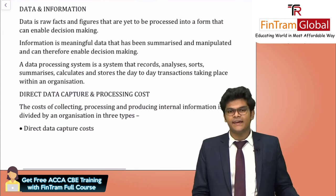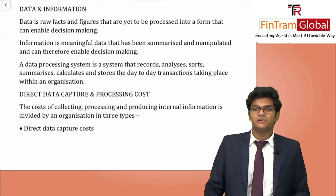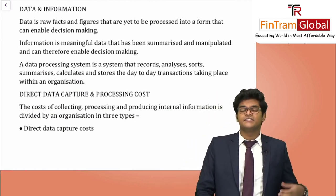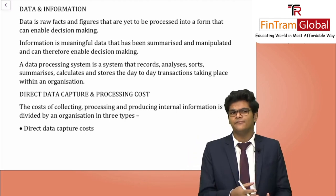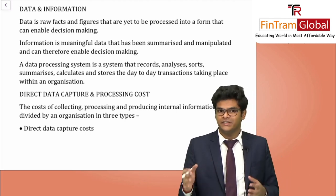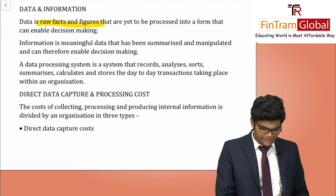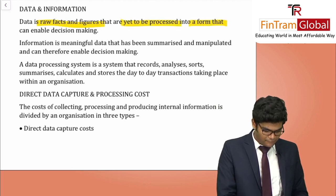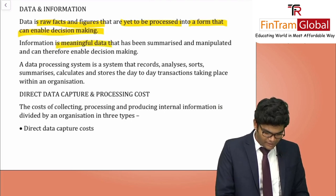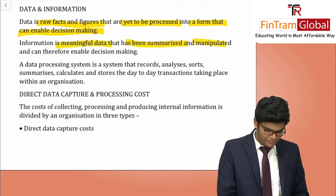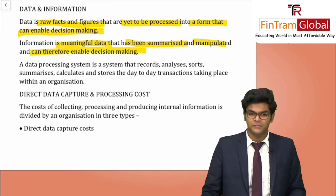Data is raw facts and figures yet to be processed. Information is the meaningful, processed form of data — it has been summarised and manipulated and can therefore enable decision making. That is the key difference between data and information.